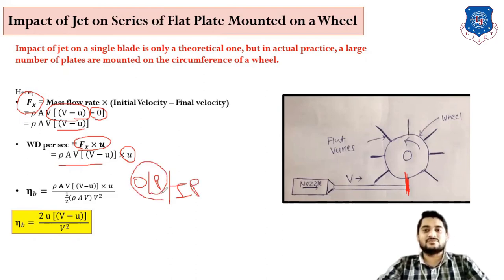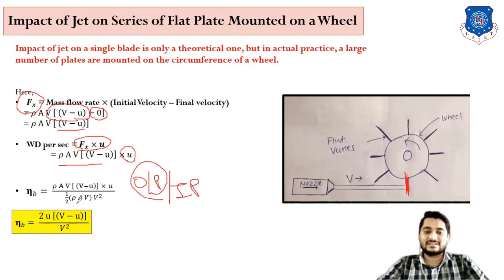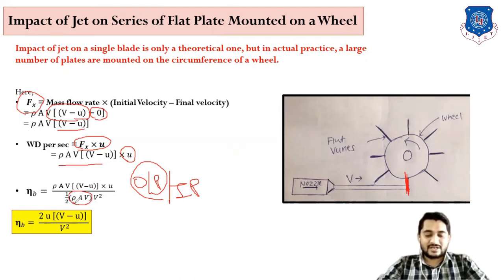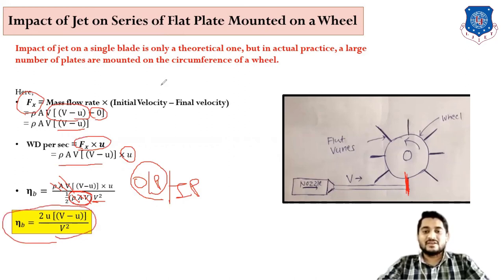From the equation of efficiency — output divided by input — output is work done per second, and input is kinetic energy per second, which is ½ṁV² = ½ρAV·V². After simplification, the efficiency of the blade in the case of series of flat blades is: η = 2U(V − U) / V².